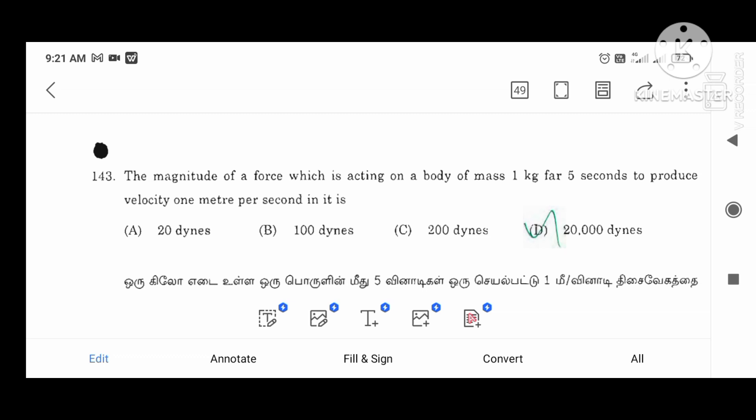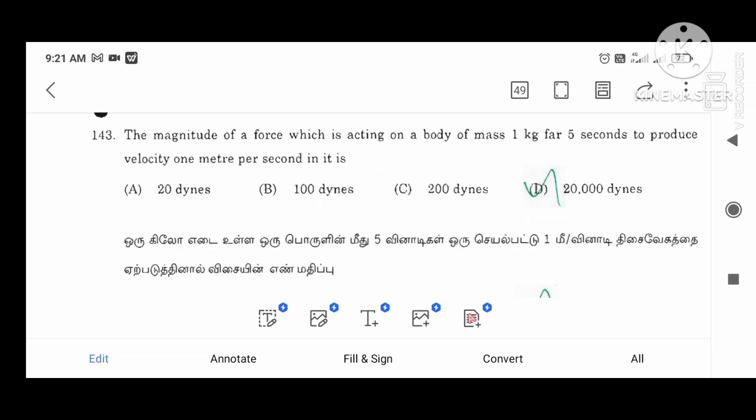So the magnitude of the force acting on the body. 1 kg for 55 seconds. So it's 3 dozens. It's 20 dozens.